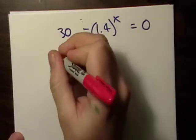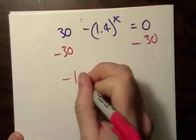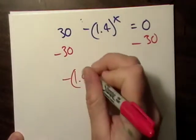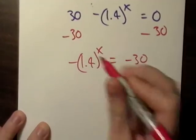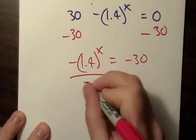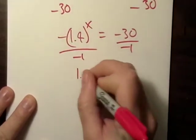from both sides. That's what I feel like doing. It's going to give me negative 1.4 raised to the x being equal to negative 30.